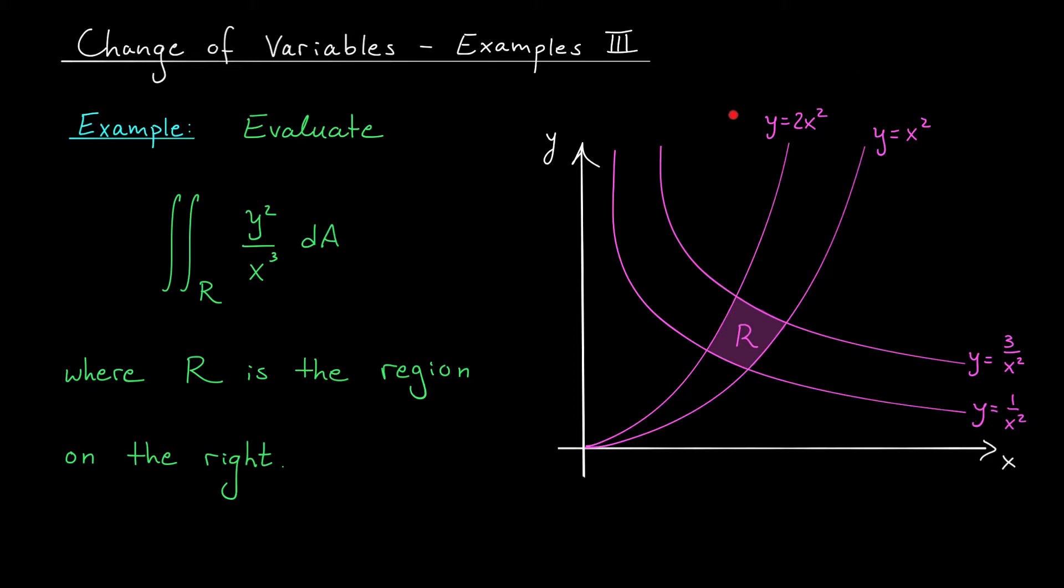So looking at our parabolas, y equals x squared and y equals 2x squared, I could rewrite these curves as y over x squared equals 1 and y over x squared equals 2, respectively.